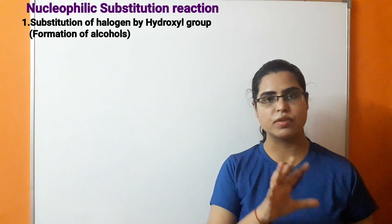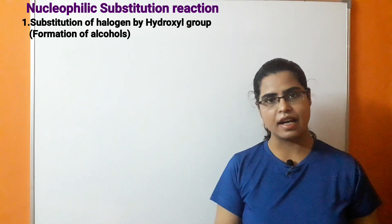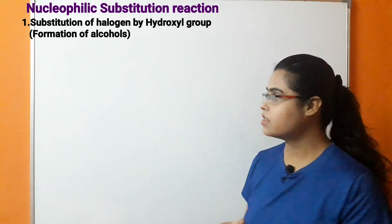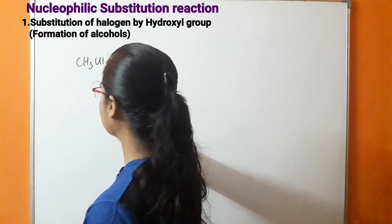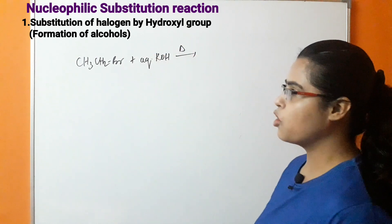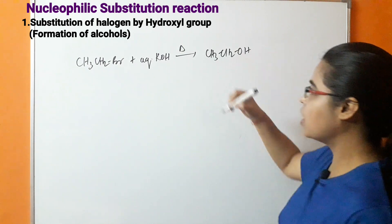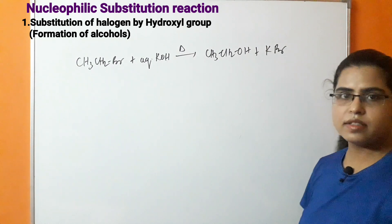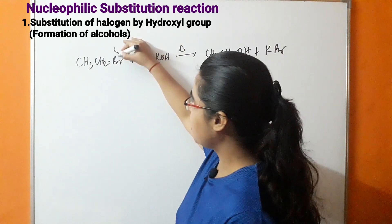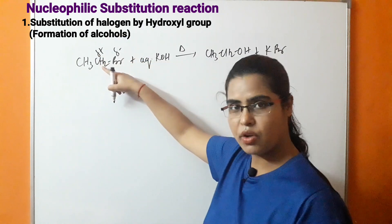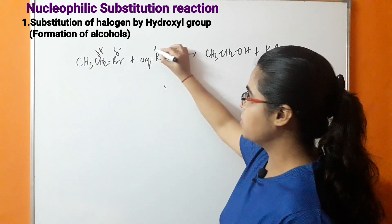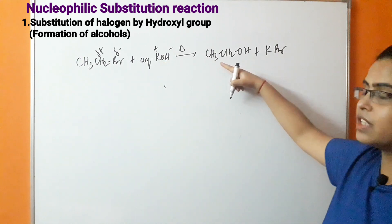The first nucleophilic substitution reaction is substitution with a hydroxyl group, which results in the formation of an alcohol. In this case, we take alkyl halide and react it with either aqueous sodium or potassium hydroxide, or we can use silver hydroxide. For example, ethyl bromide reacted with aqueous KOH gives ethyl alcohol and KBr is removed. This happens because of the electronegativity difference — bromine carries partial negative charge and carbon carries partial positive charge; KOH is ionic with negative charge on OH and positive on potassium.